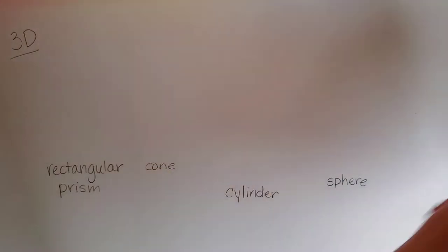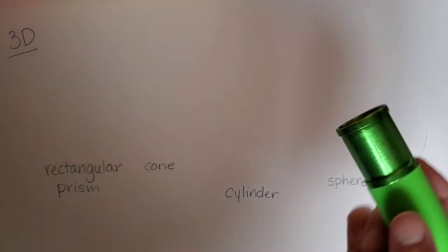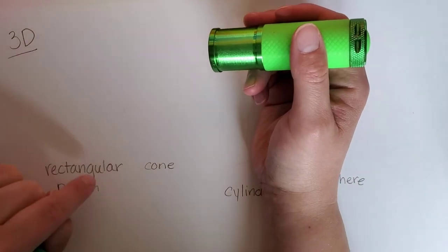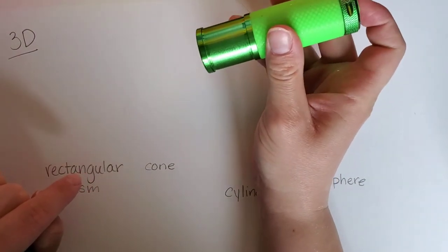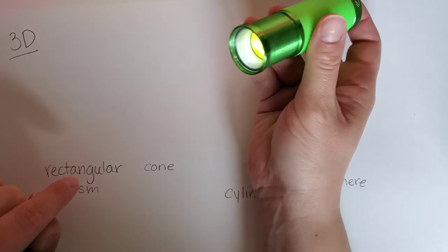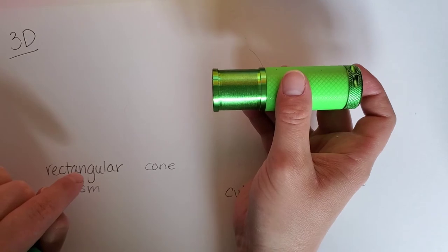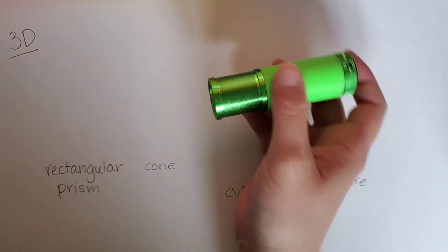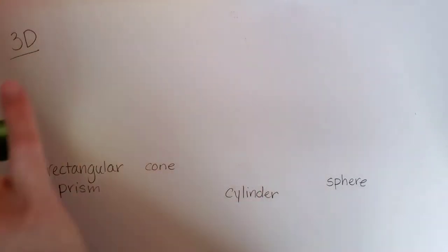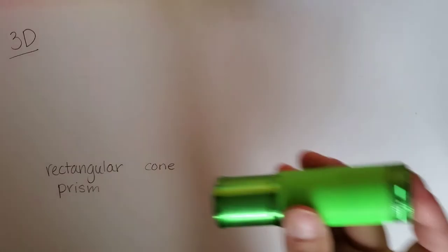When you're drawing three-dimensional shapes, you have to keep those very same concepts in mind. So imagine if I was going to draw a rectangular prism, I would have to first decide which direction my light is shining on. So here's my little flashlight. If my flashlight is shining on this side of my rectangular prism, then the shadow will go on the back side. If it's shining from above, the shadow is below. If it's shining over here, the shadow goes on that side.